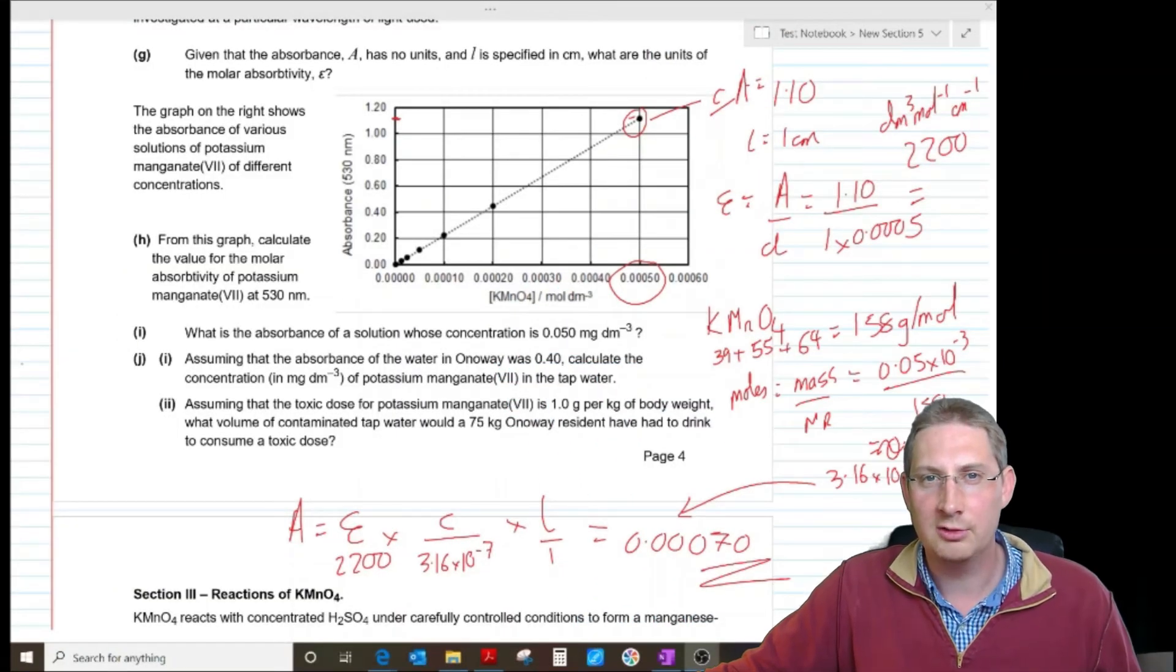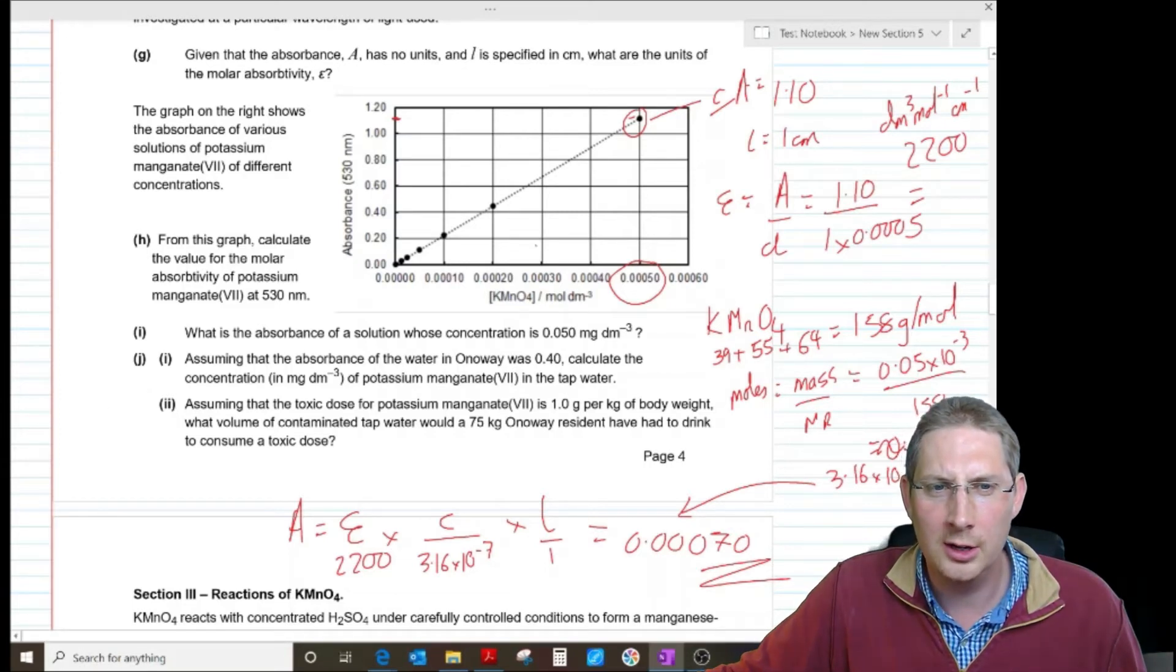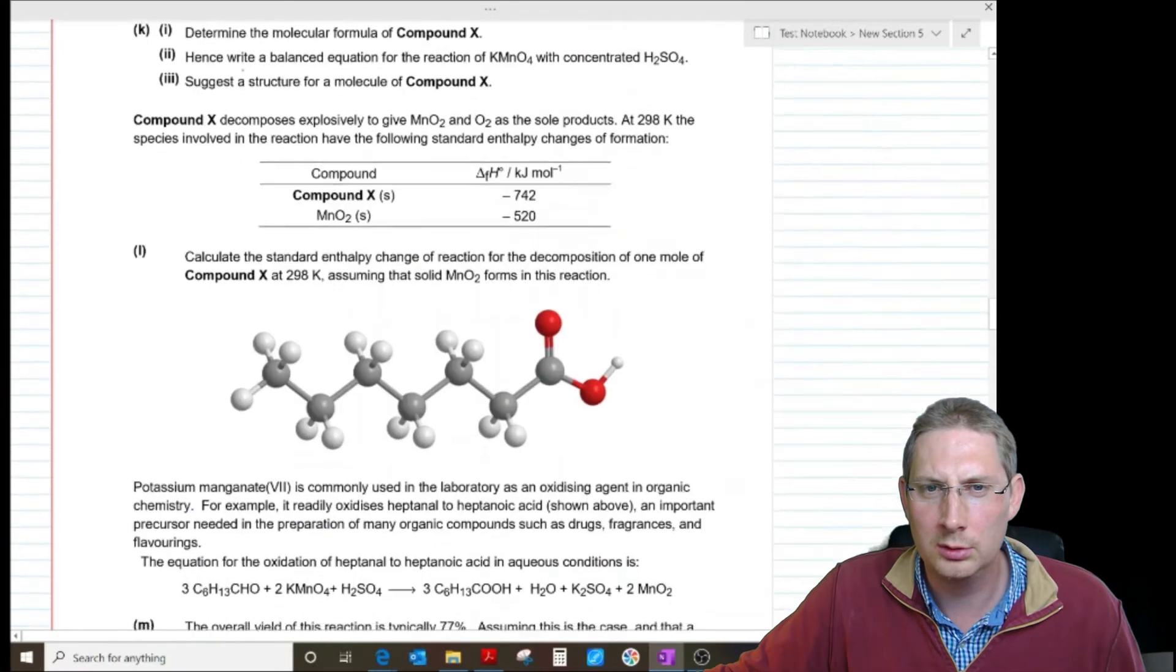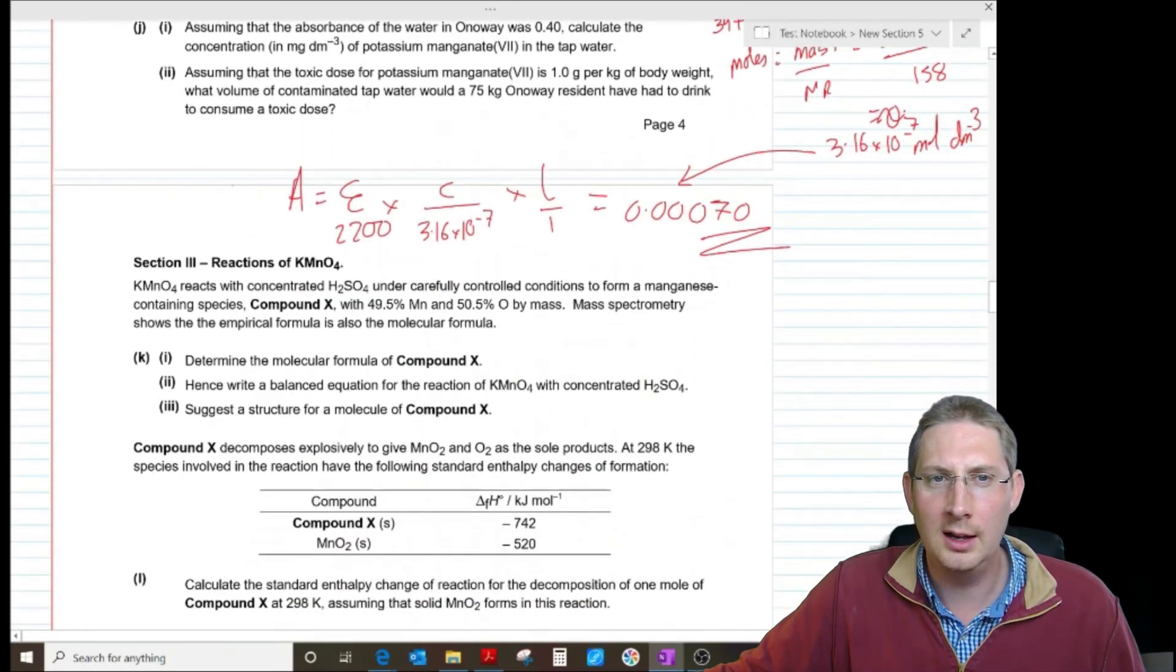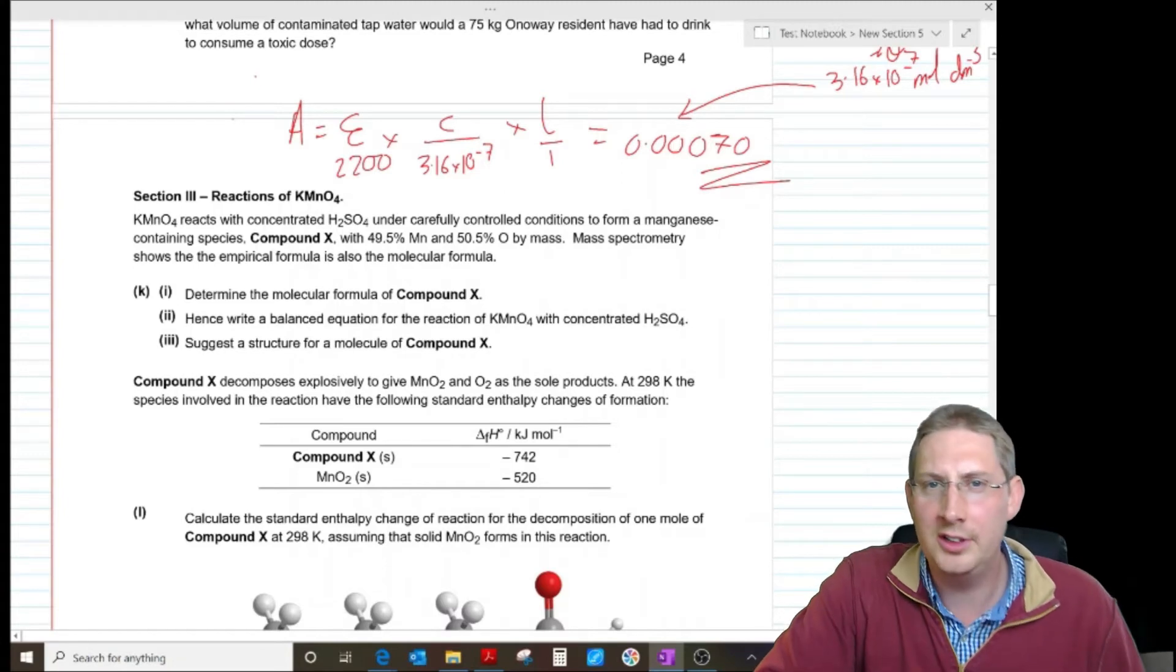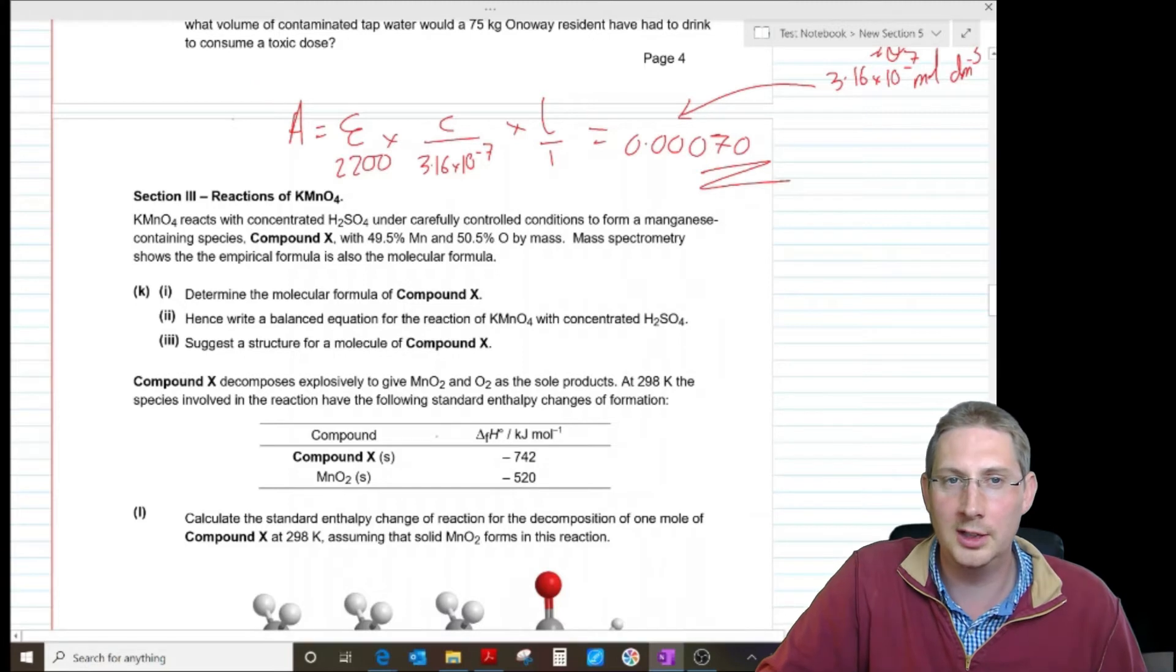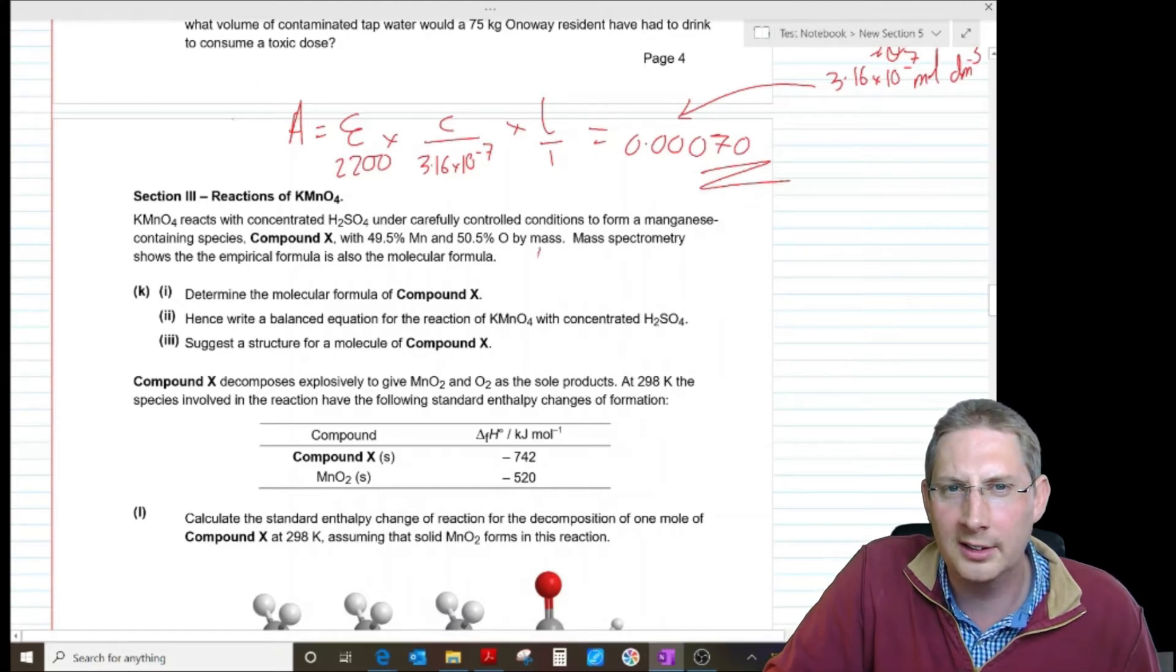Sorry about that, rather annoying fly buzzing around there. So KMnO4 reacts with concentrated H2SO4 under carefully controlled conditions to form a manganese containing species compound X with 49.5% manganese and 50.5% O by mass. Mass spectrometry shows the empirical formula is also the molecular formula. Determine the molecular formula of compound X.